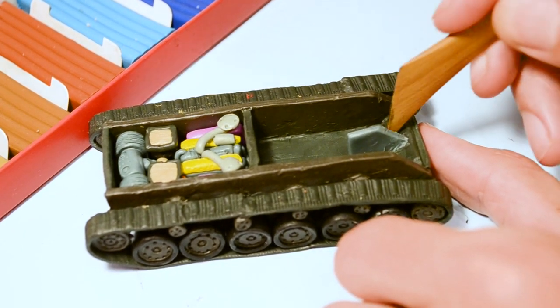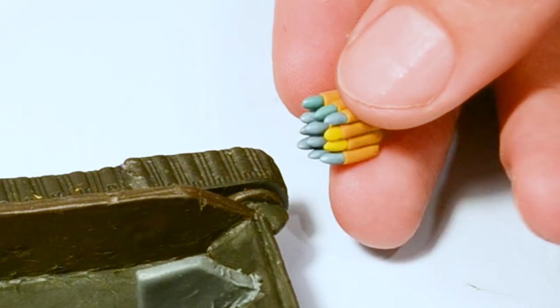Driver seat, as usual in frontal part, at the right side of the hull. At the left side placed shells for main gun.